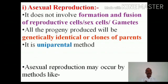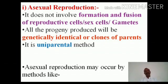First we will see asexual reproduction and then we will proceed to sexual reproduction in detail. Asexual reproduction does not involve the formation and fusion of reproductive cells, sex cells or gametes. In asexual reproduction, all the progeny produced are genetically identical, and as they are genetically identical, they are many times referred to as clones. One more important thing: asexual reproduction is a uniparental method — there is no male or female parent, only one parent, and the progeny is produced from it.